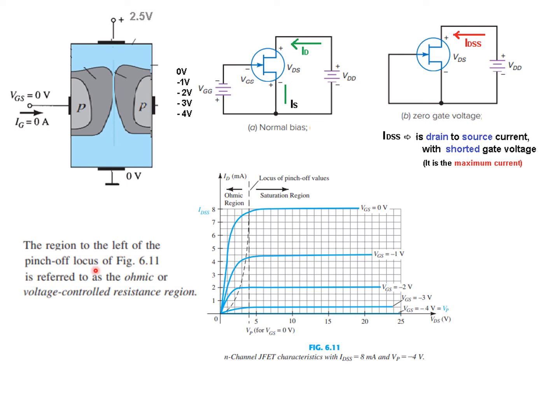The region to the left of the pinch-off point is referred to as the ohmic or voltage-controlled resistance region. This curve follows a V and I relation — by Ohm's law, V over I is a resistance, so it follows this relation here. But in the region to the right, as V increases the current is not increasing — this is the saturation region. So we have the ohmic region (voltage-controlled resistance region) and the saturation region.